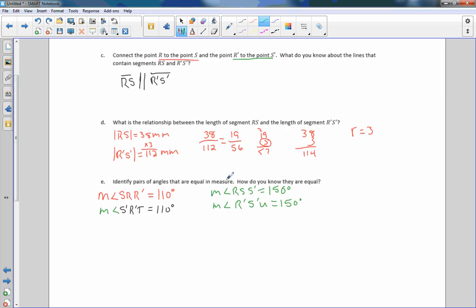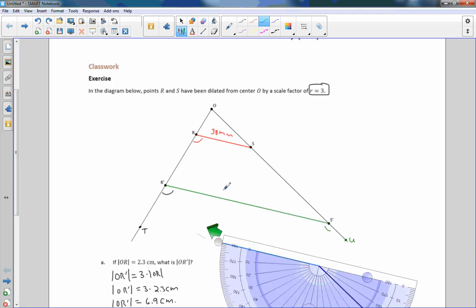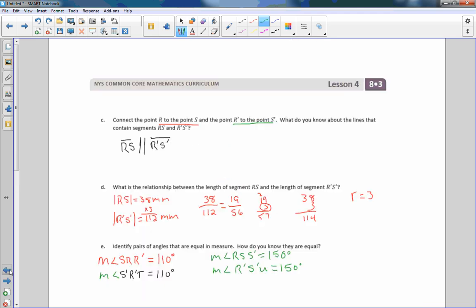Okay, identify the pairs of angles that are equal in measure. How do you know they are equal? They are equal, I'm not going to write this, I'm just going to say it. They're equal because we have two parallel lines, RS, and R prime, S prime, are parallel. So whenever we want to identify a parallel line, we put a little arrow there indicating parallel. And when they're parallel, cut by a transversal, then we are forming corresponding angles. This angle corresponds to this angle, and angle S, R, R prime, corresponds to angle S prime, R prime, T. So since they are corresponding angles on parallel lines, they are congruent.